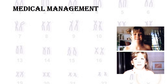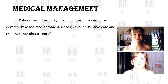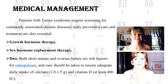Turner syndrome is managed medically by screening patients for commonly associated chronic diseases. Early preventive care and treatment are essential, including growth hormone therapy, sex hormone replacement therapy, and diet. Both short stature and ovarian failure are risk factors for osteoporosis, so adequate daily intake of calcium — 1 to 1.5 grams — and vitamin D — at least 400 international units — should be ensured.